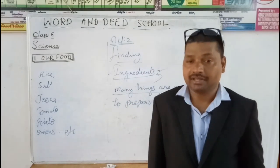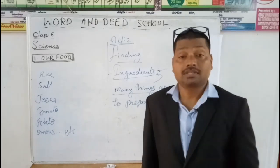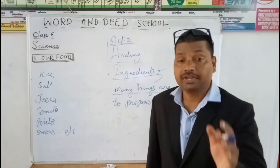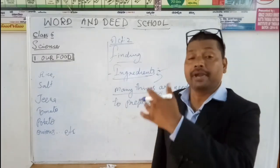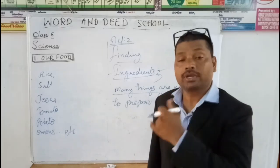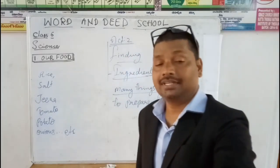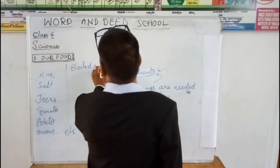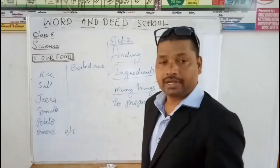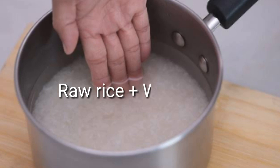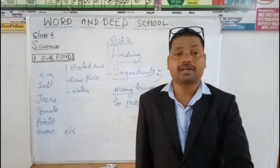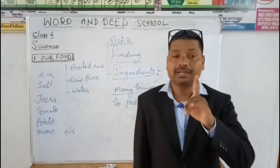If he missed any material, complete the list on your own. Srinivas was surprised that while cooking boiled rice, we needed only two materials. But why are so many materials required for cooking biryani? For cooking boiled rice, we need only two things: raw rice and water.